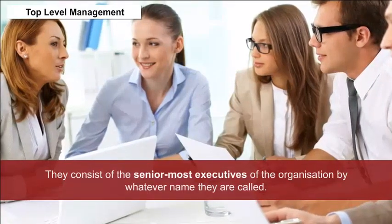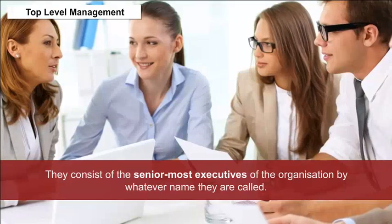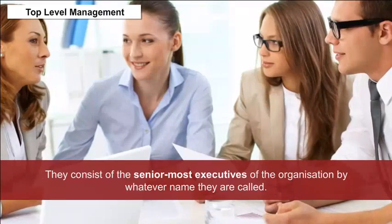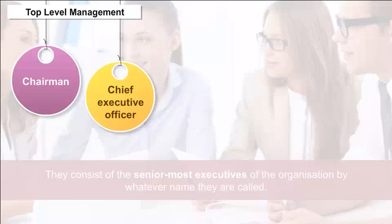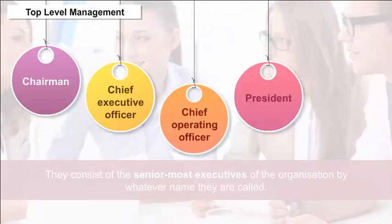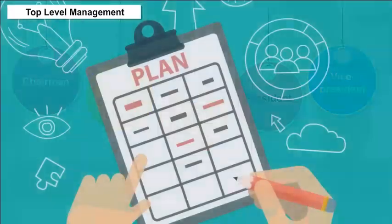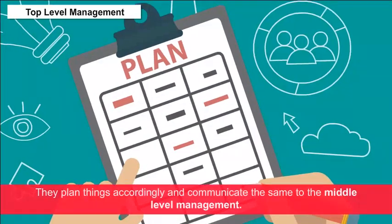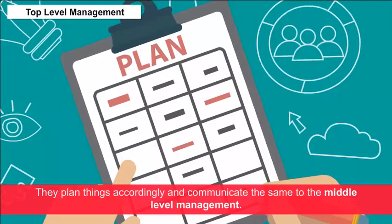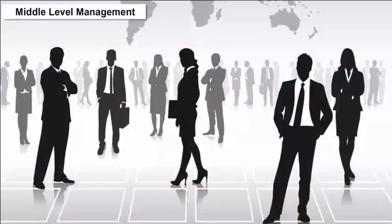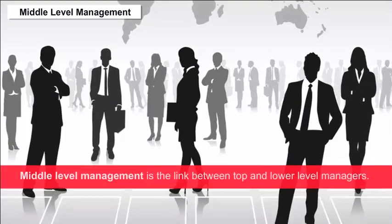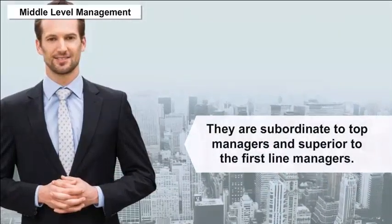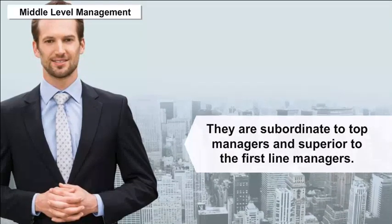Top Level Management: They consist of the senior-most executives of the organization, usually referred to as the chairman, chief executive officer, chief operating officer, president and vice president. The top level management is responsible for planning activities and communicates these plans to the middle level management. Middle Level Management: Middle level management is the link between top and lower level managers — they are subordinate to top managers and superior to first line managers.